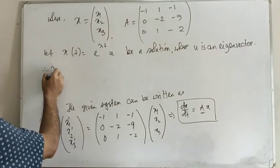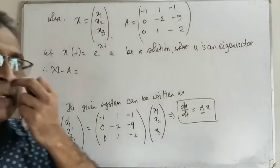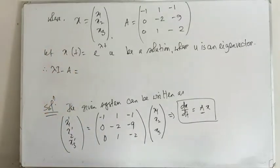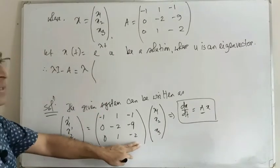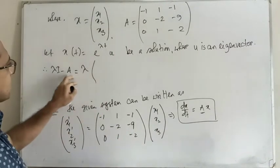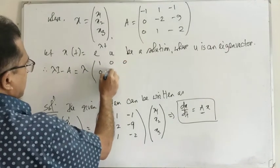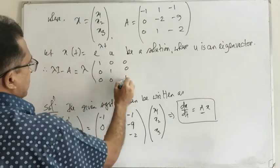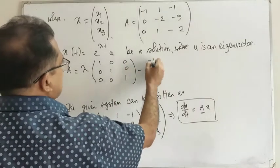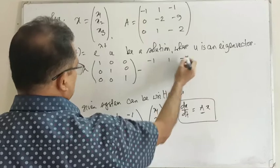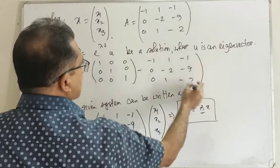The characteristic matrix is lambda I minus A. Lambda I minus A equals lambda times the identity matrix minus A, which gives the matrix: minus 1, 1, minus 1, 0, minus 2, minus 9, 0, 1, minus 2 subtracted from lambda times I.